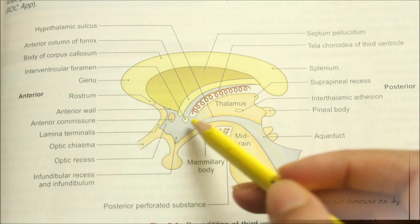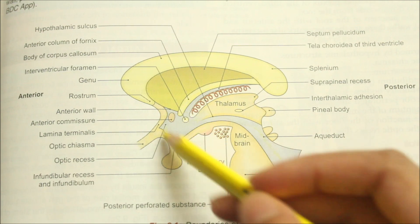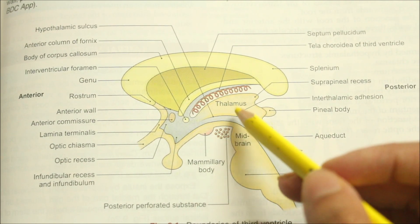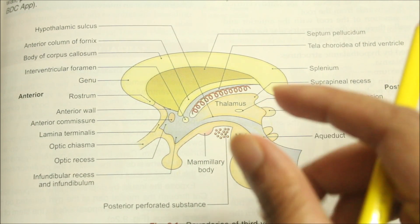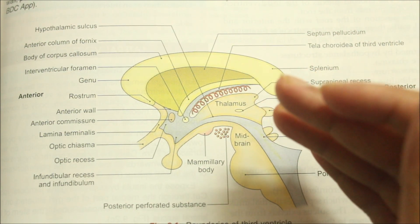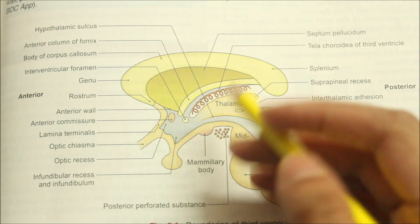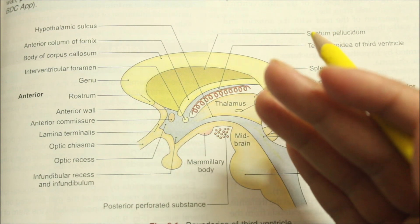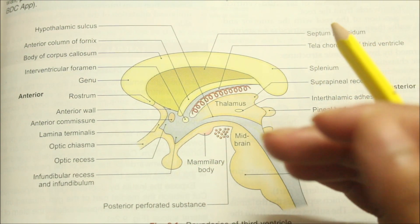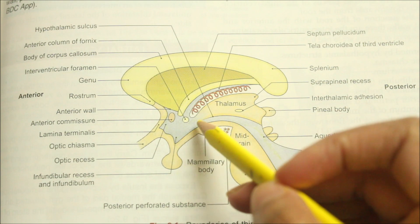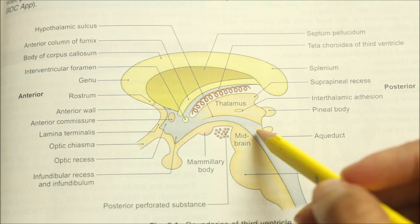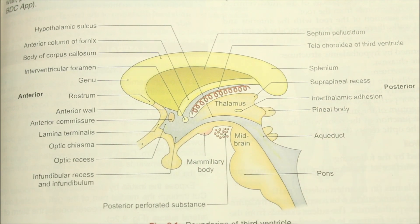Now looking at the clinical anatomy of the third ventricle: it is a narrow space which is easily obstructed by local brain tumors or by developmental defects. The obstruction leads to raised intracranial pressure in adults and hydrocephalus in infants. Tumors in the lower part of the third ventricle give rise to hypothalamic syndromes.